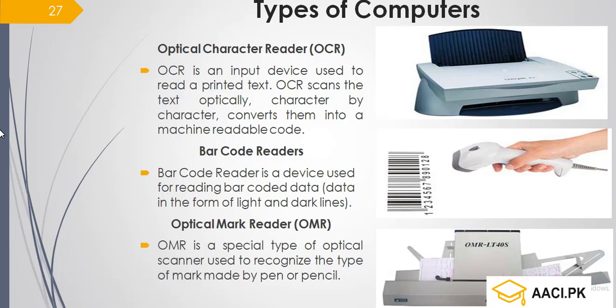Barcode reader is an advanced input device. It reads light and dark lines in a barcode to identify and display data. Optical mark reader is a special type of optical scanner used to recognize marks made by pen or pencil, identifying small marks from a form.